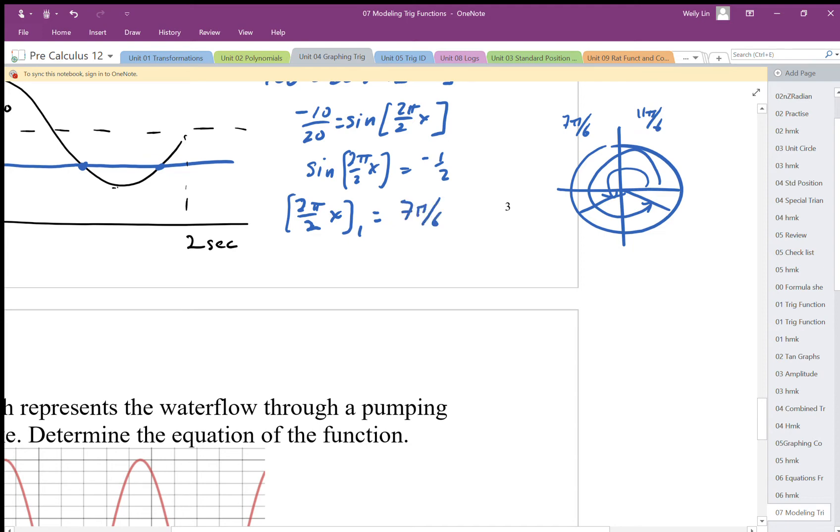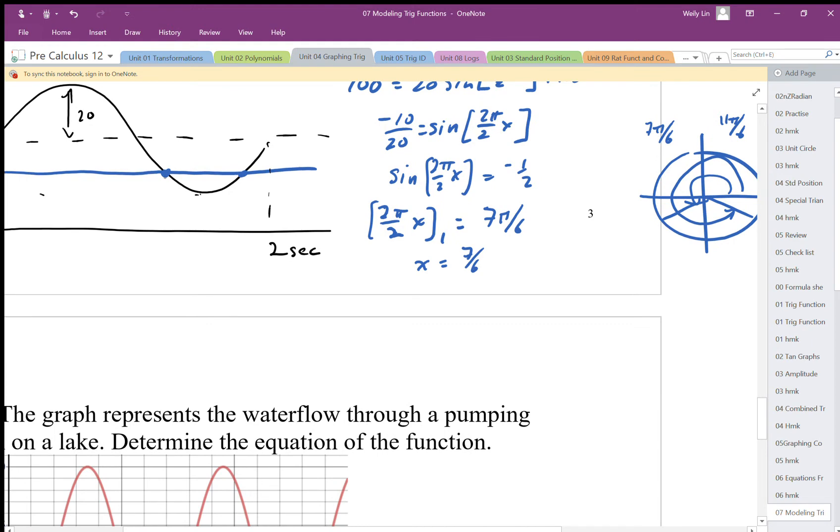We get the first one will be 7π over 6. We solve that for x. We divide by π, we end up with 7 over 6, which is about 1.6 repeating. So that's going to be about 1.16 or 7 over 6.